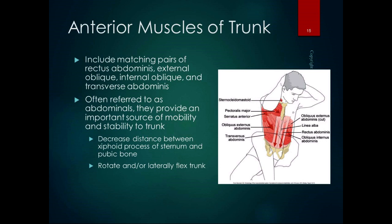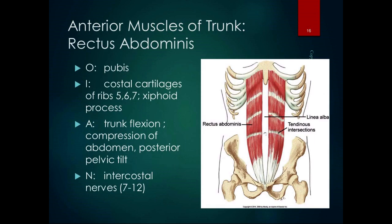Most of the abdominal muscles, except for the transverse abdominis, decrease the distance between the xiphoid process of the sternum and the pubic bone. They rotate and/or laterally flex the trunk — so they do flexion, rotation, and lateral flexion. Rectus abdominis: we all have a six-pack, just some people you can see it and some people can't. It originates at the pubis and inserts on the costal cartilages of ribs five, six, and seven, and the xiphoid process.